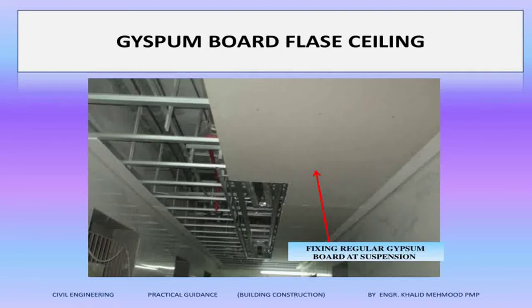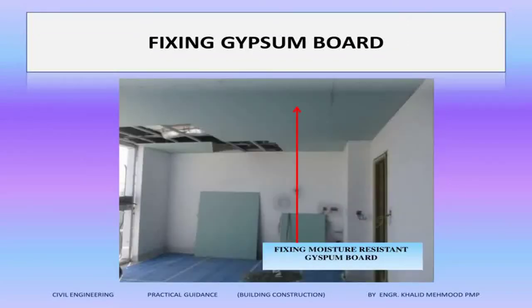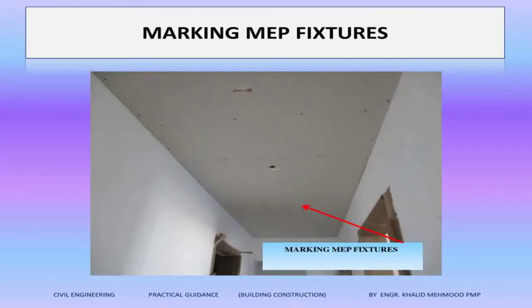Now we will start closing the assembly with the gypsum board false ceiling. Here you can see the gypsum board is fixed and you cannot see the GI assembly now. This is the green color gypsum board — this is a moisture-resistant gypsum board we are using in toilets and kitchens.